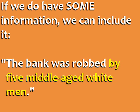Now, if we have some information about the bank robbers, we can include it. For example: 'The bank was robbed by five middle-aged white men.' Even though we don't know the exact identity of the robbers, the phrase 'by five middle-aged white men' adds extra and relevant information to the sentence, so we can include it.